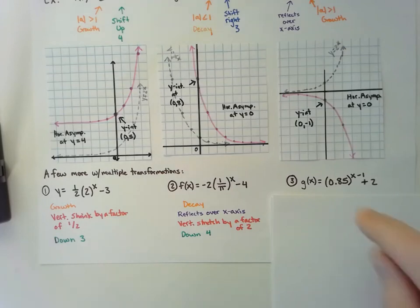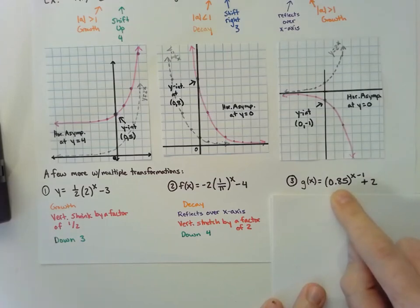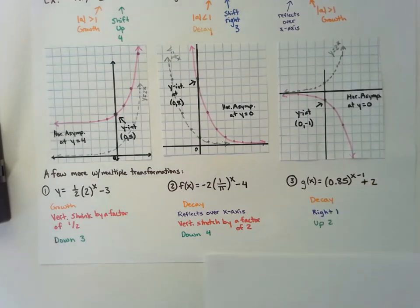And one more. This one would be a decay function because the base value is less than 1 but greater than 0. In the exponent it has a minus 1, so it would go to the right 1 unit. And then it went up 2 units.